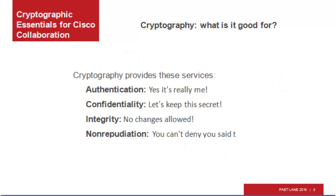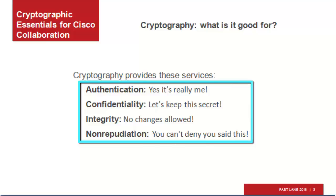Cryptography provides these services. Authentication — yes, it's really me. Authentication guarantees that a message comes from who it claims to come from. Confidentiality — let's keep this secret. Confidentiality ensures that only the desired party can read the message. Integrity — no changes allowed. Integrity ensures that messages can't be changed without the reader knowing. And non-repudiation — you can't deny you said this. Non-repudiation ensures that if you send a message, you can't later deny that you sent it. These are important services for your collaboration environment.